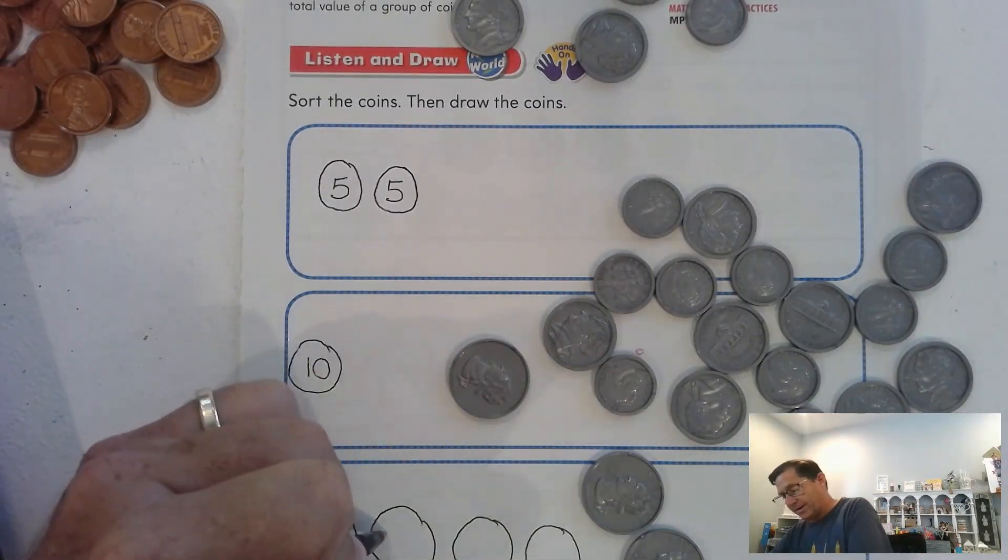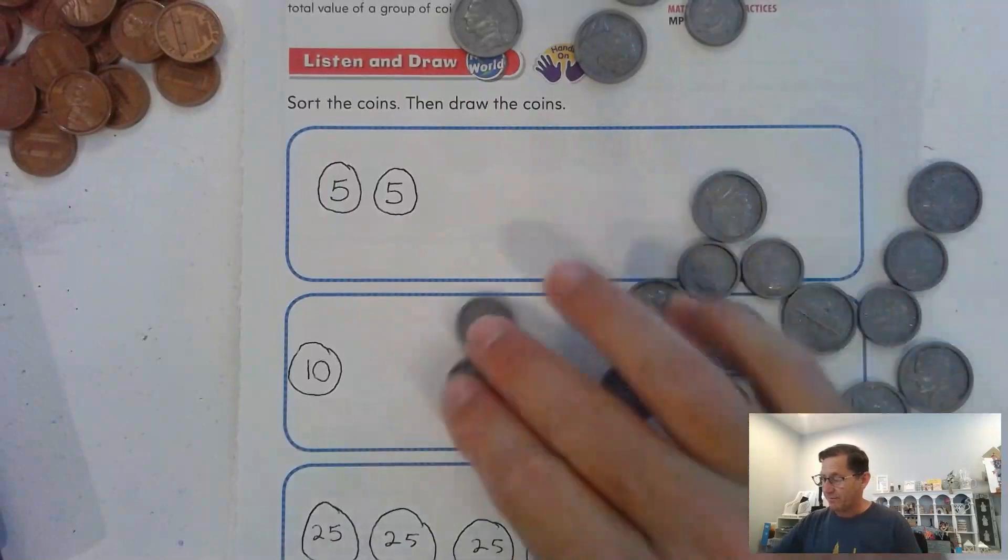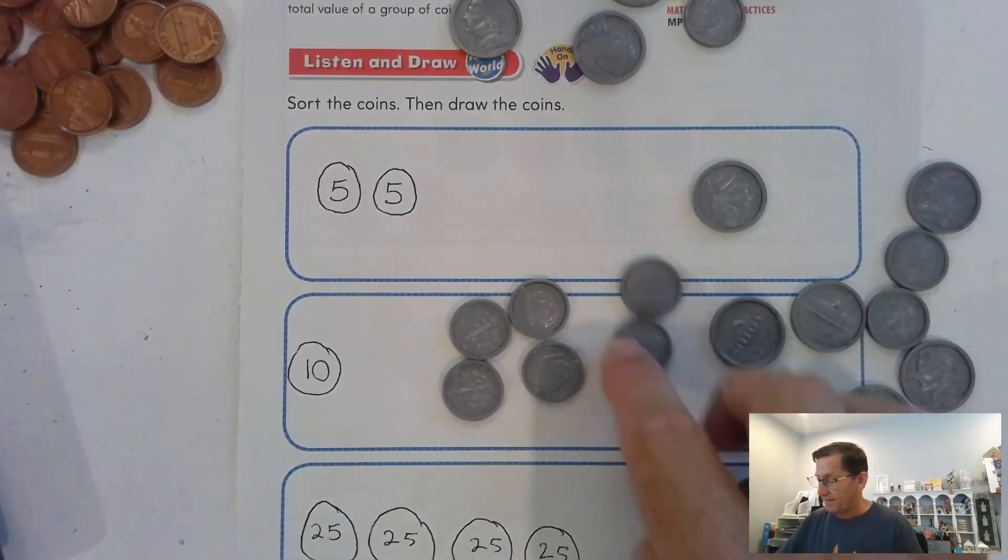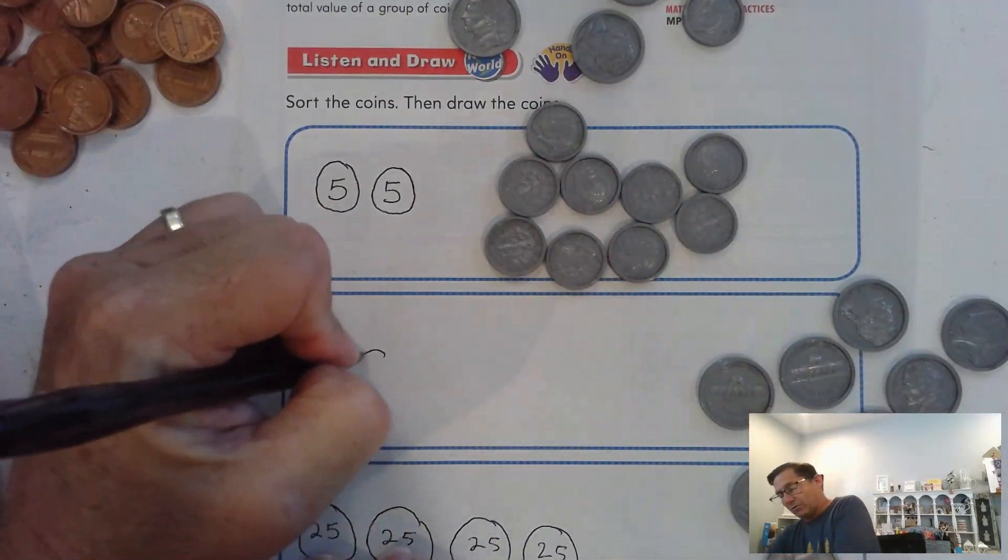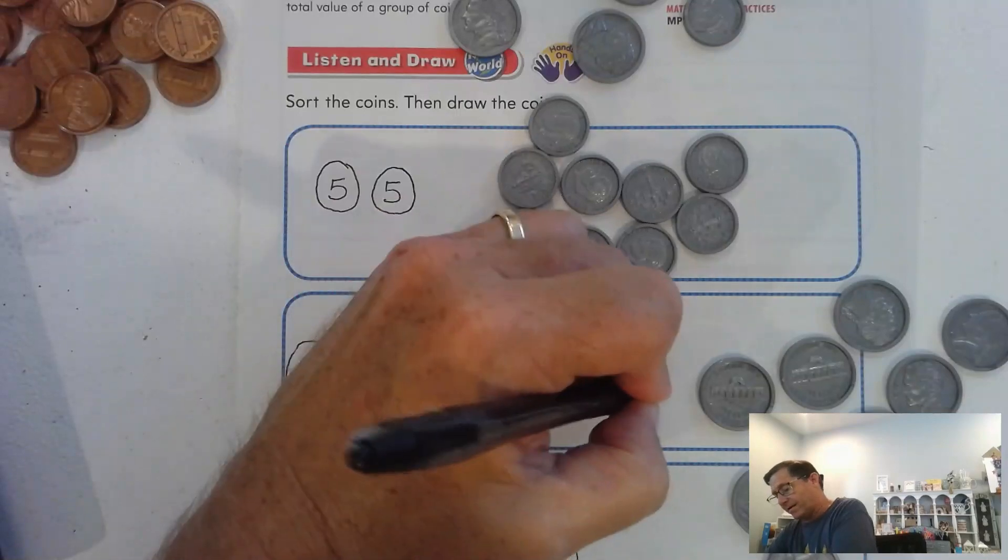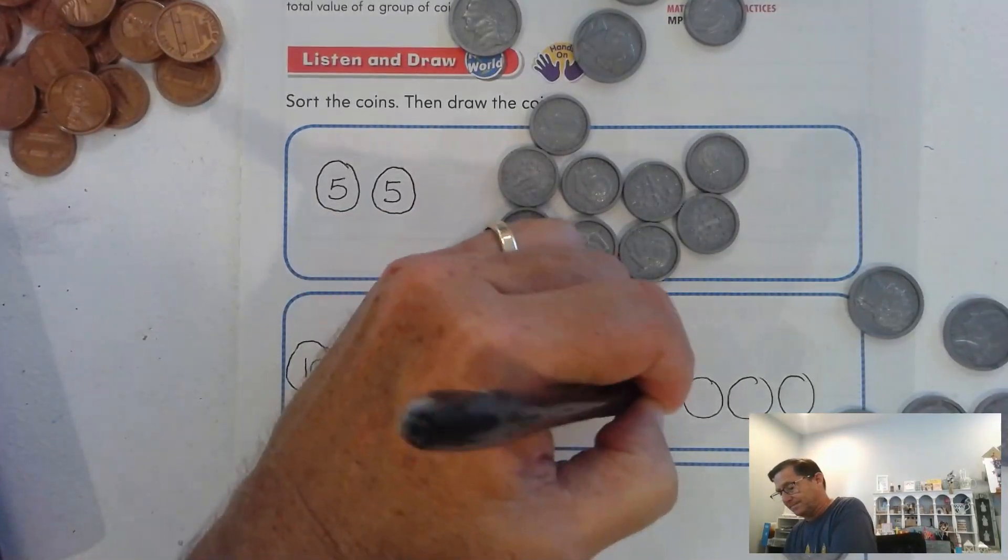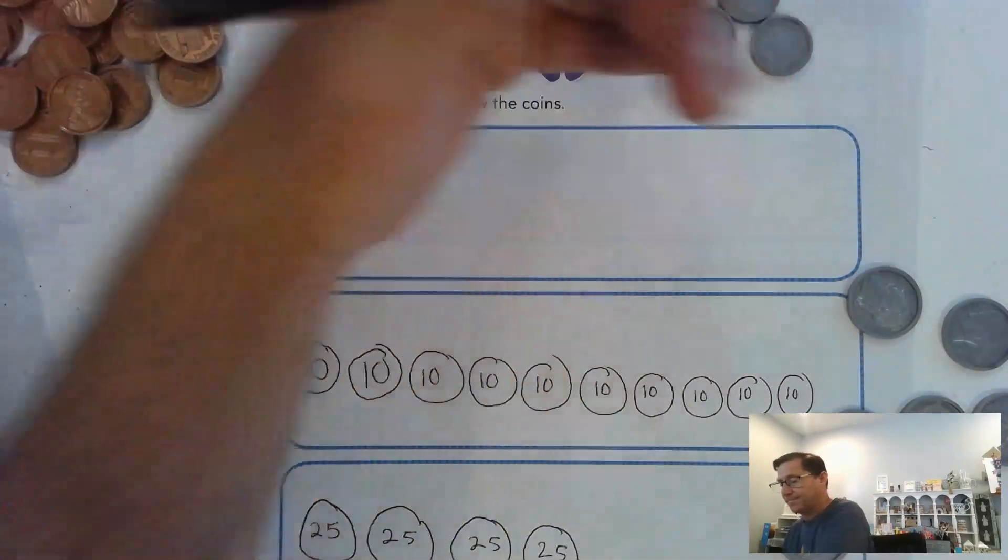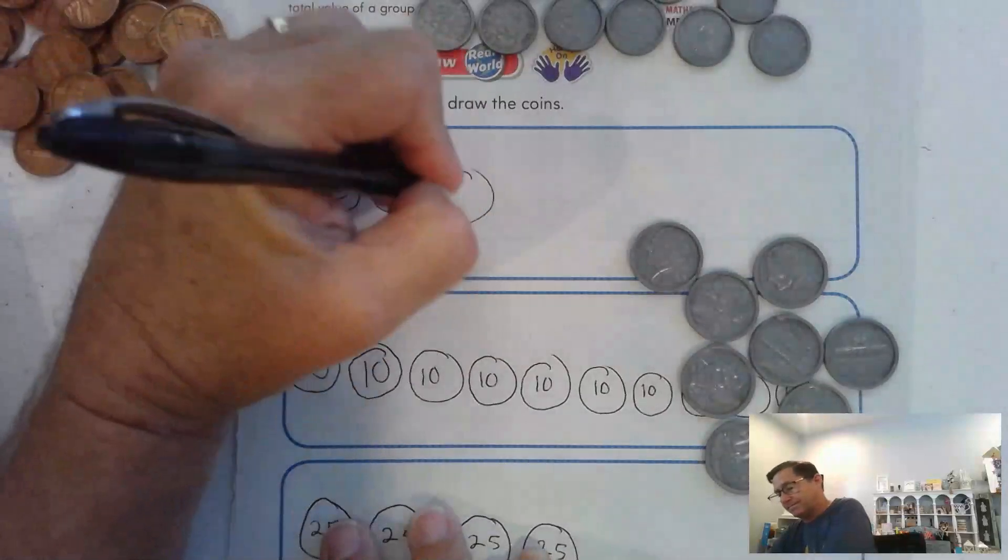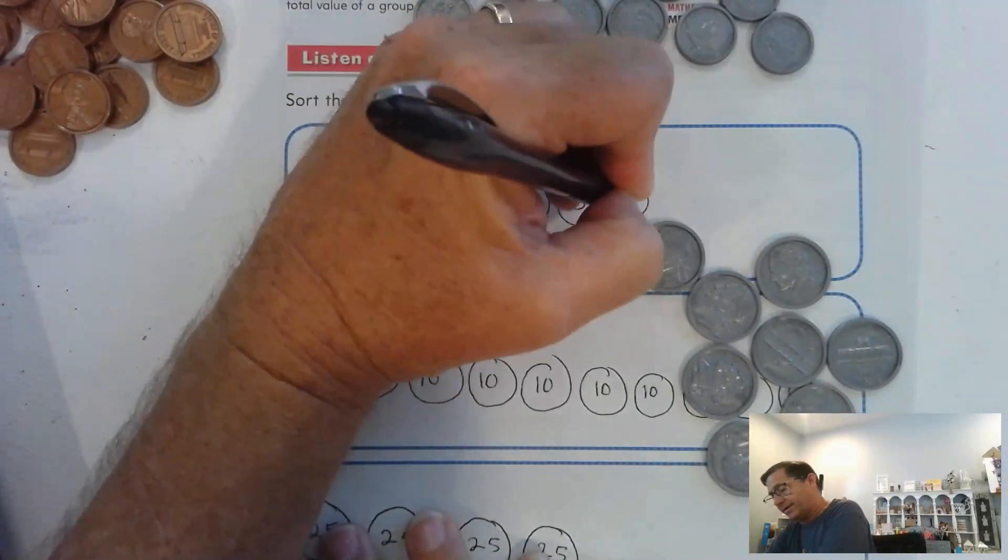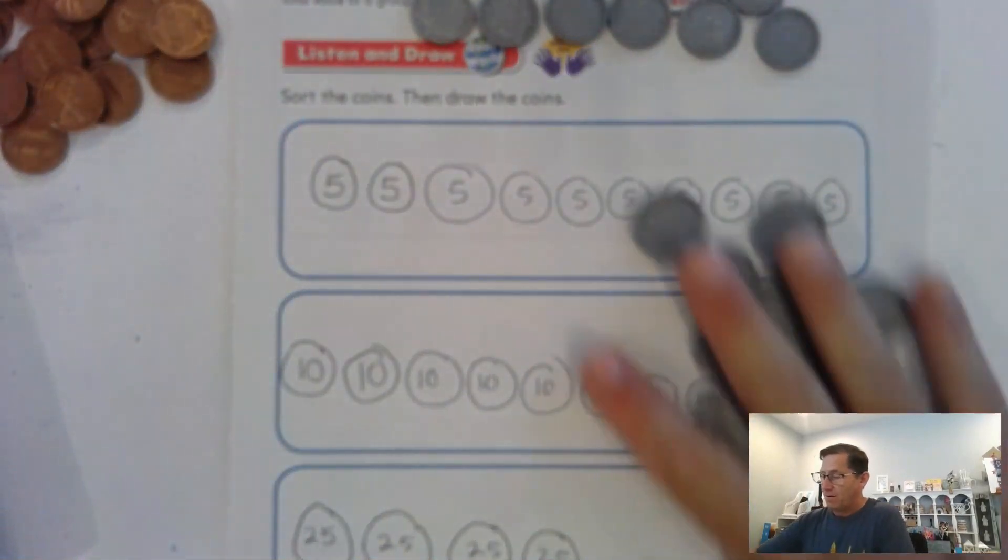I have one, two, three more quarters. I'm gonna go ahead and draw those in. One, two, three, and each quarter is worth 25 cents. Now how many dimes do I have left? I have nine more dimes, so I'm going to draw nine more circles, and each of those dimes is worth 10 cents. How many nickels do we have left? We have eight more nickels.